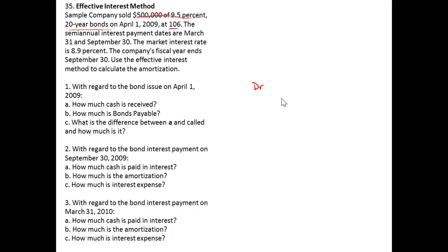On April 1st when we issued the bond, we know that we're going to receive cash for 106%, which is the price, times $500,000. So we're going to receive cash of $530,000 and that's its present value. We know we're going to credit bonds payable for the future value, what you're going to pay back, and you're going to pay back $500,000.